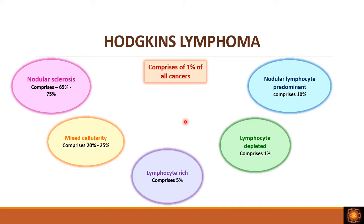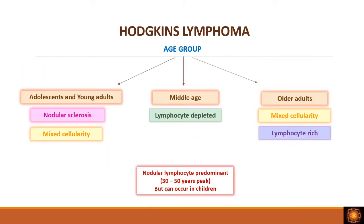Looking at frequency: nodular sclerosis is the most common type, comprising 65 to 75 percent of cases. Next is mixed cellularity at 20 to 25 percent. Then nodular lymphocyte predominant at 10 percent, lymphocyte rich at 5 percent, and lymphocyte depleted is the rarest at only one percent of Hodgkin's lymphoma cases.